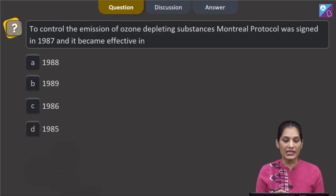This question says that to control the emission of ozone depleting substances, Montreal Protocol was signed in 1987 and it became effective in... Definitely if it was signed in 1987, it became effective after that year only.